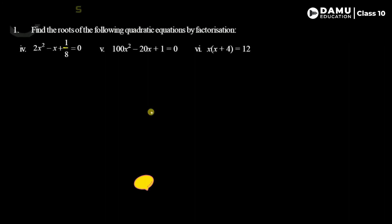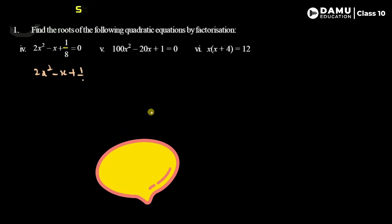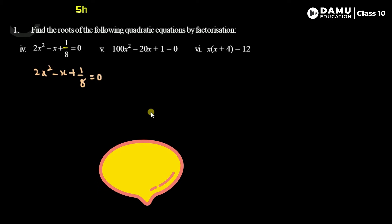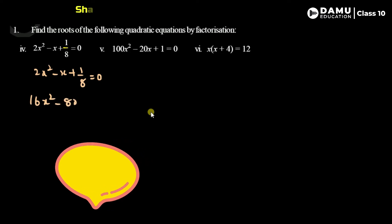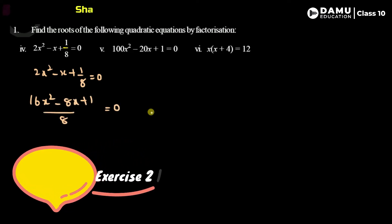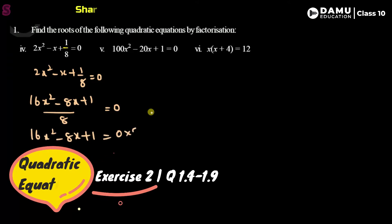The fourth problem is 2x² - x + 1/8 = 0. To simplify, multiply through by 8 to get 16x² - 8x + 1 = 0. So we have the quadratic equation 16x² - 8x + 1 = 0.